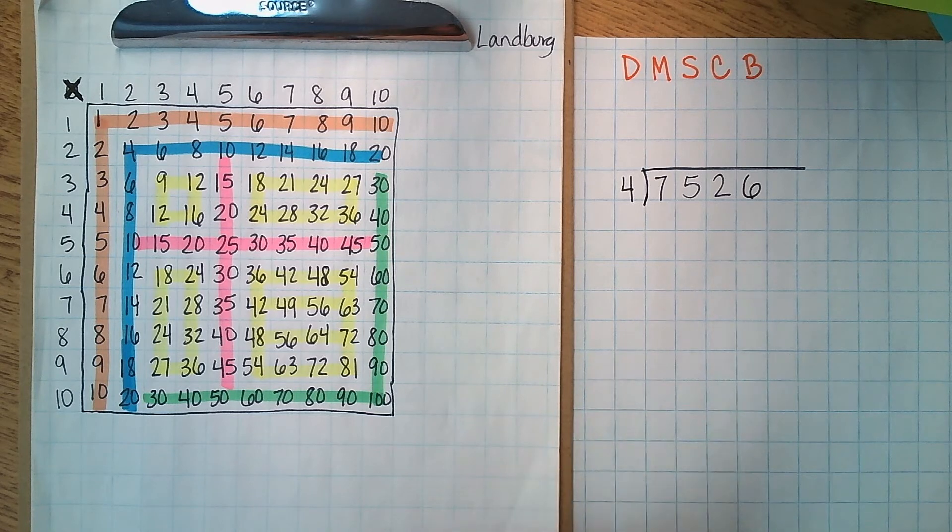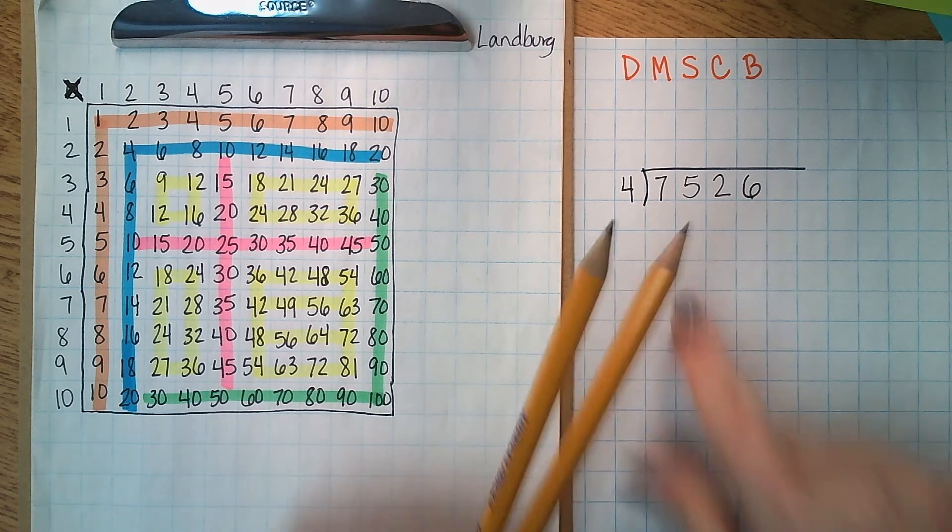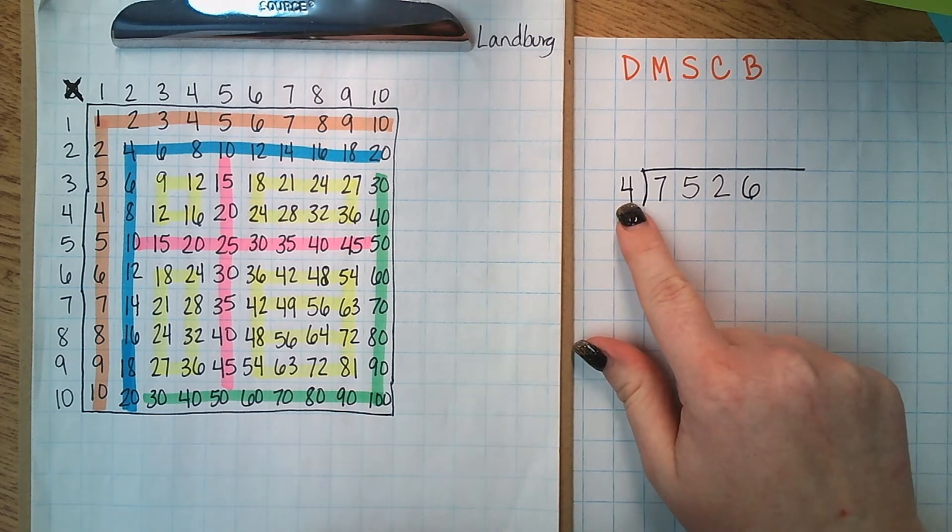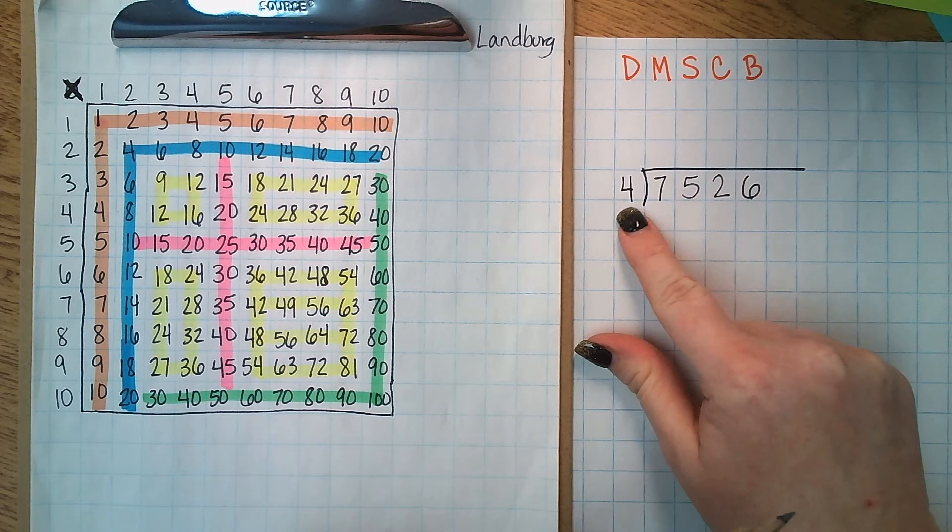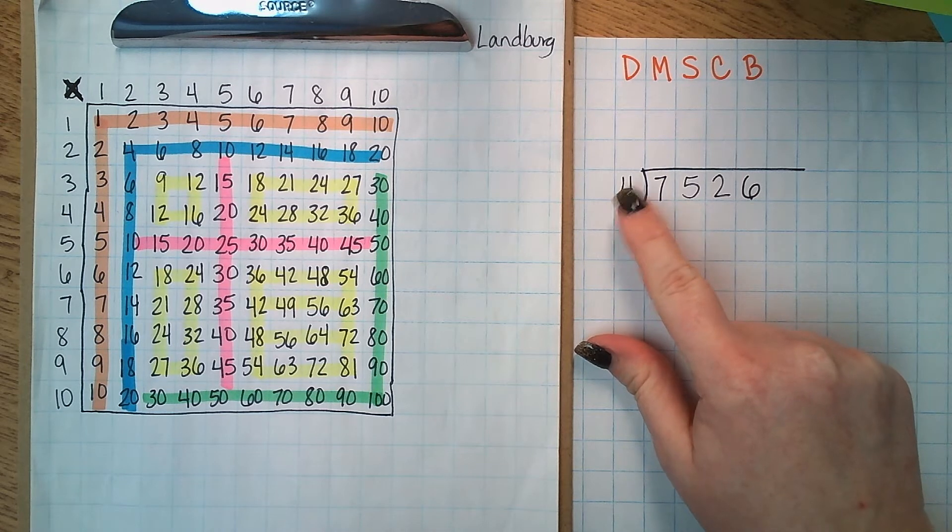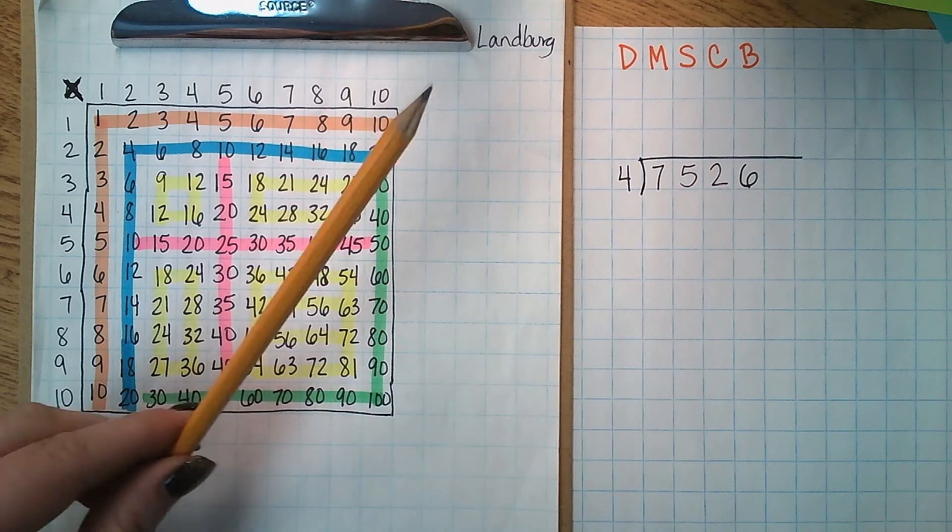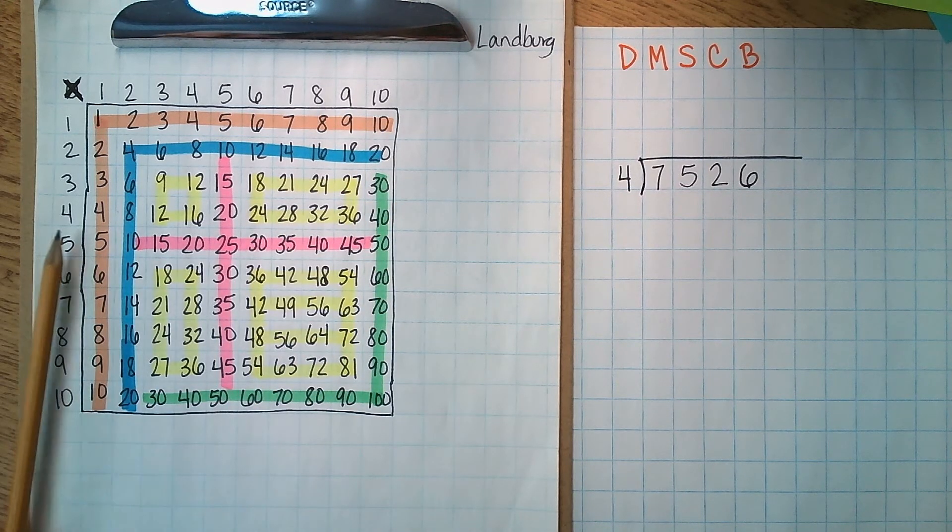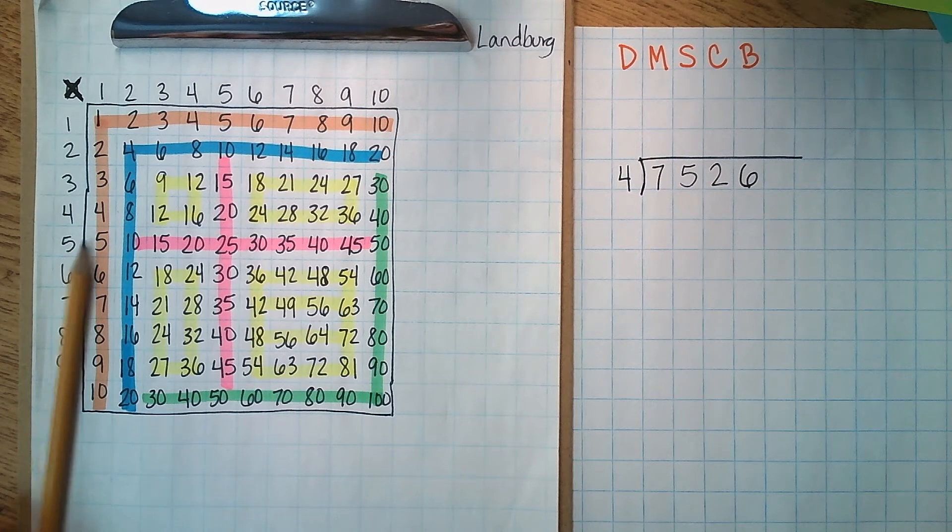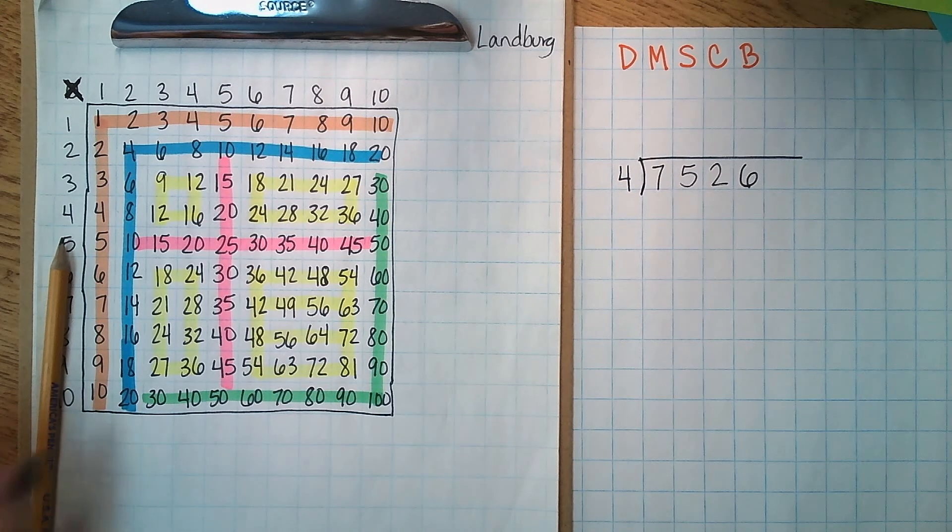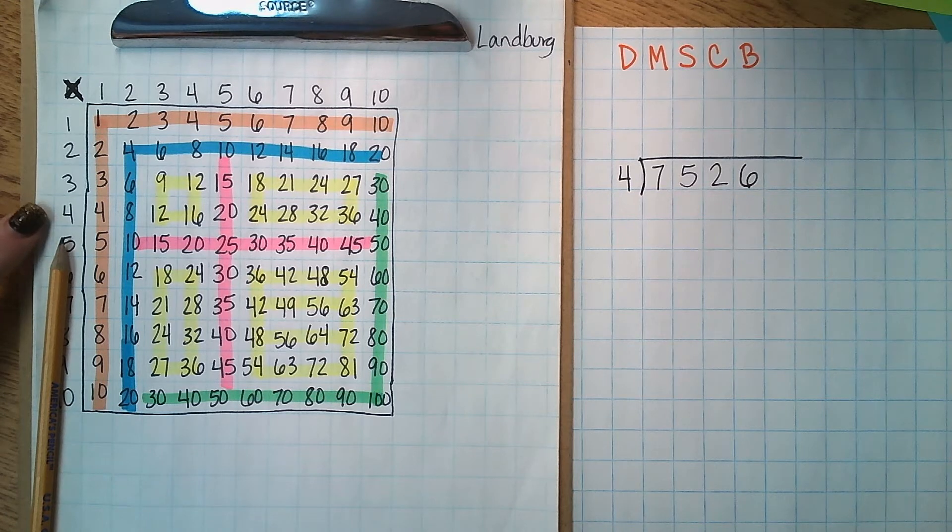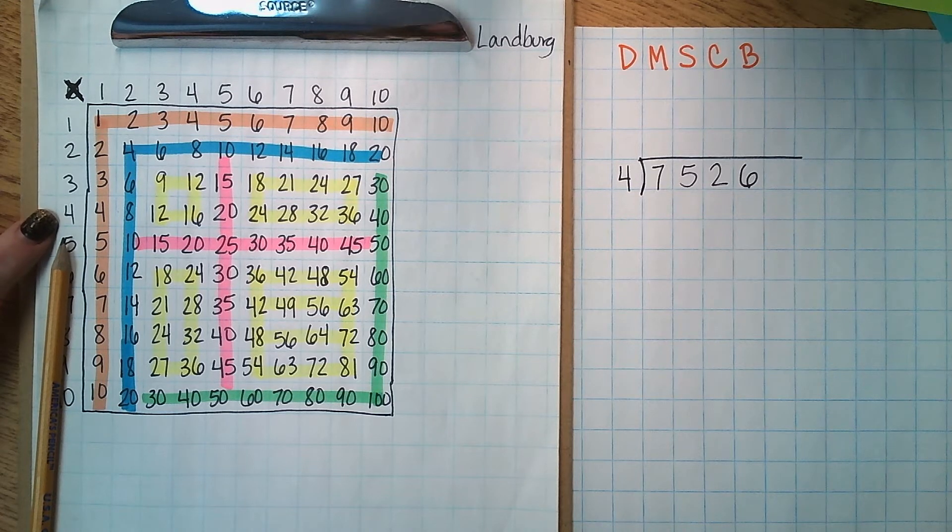The first thing they are going to do is they are going to look and see what number right here is on the outside of their house. In our instance we have the number four here. So they're going to take one of their pencils and point at the number four because that shows us that we are working with our fours.